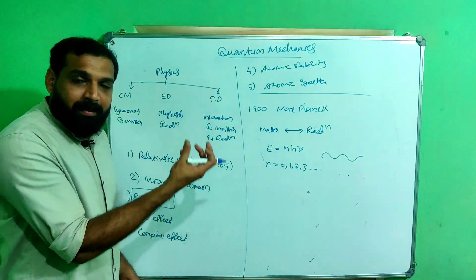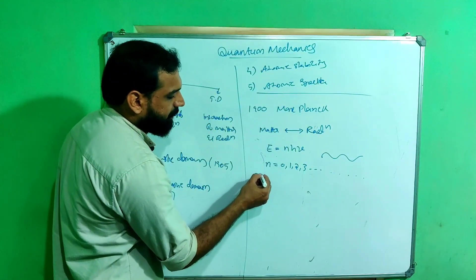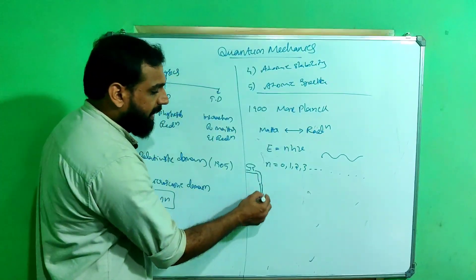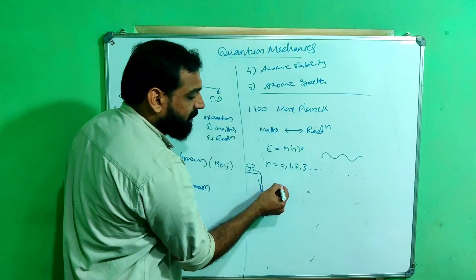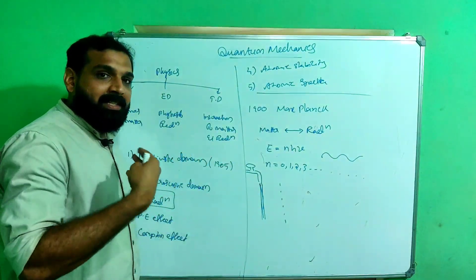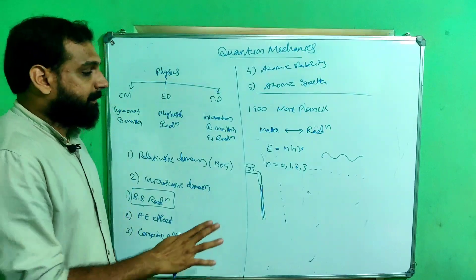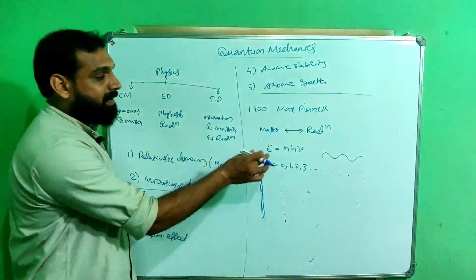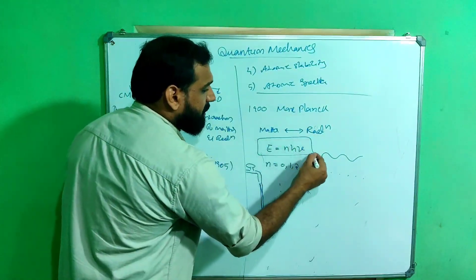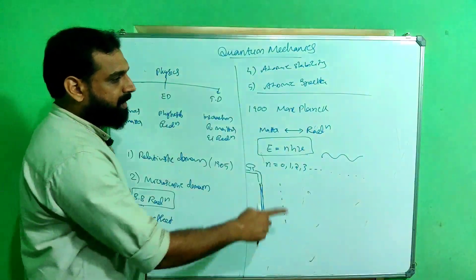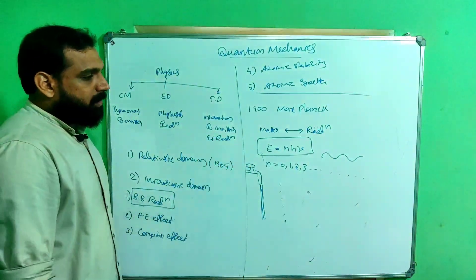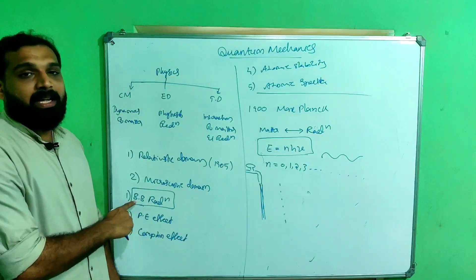When we close the tap partially, water comes out as droplets — that is discrete. Whenever I say continuous and discrete, this should come to mind. Max Planck proposed that energy exchange between matter and radiation is discrete. This is called Planck's quantization principle: energy exchange should be in integral multiples of h·ν, where ν is the frequency. Based on this proposal, he successfully explained black body radiation. That was the first breakthrough.